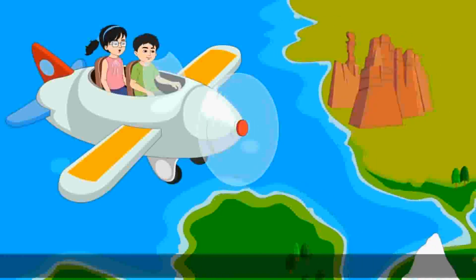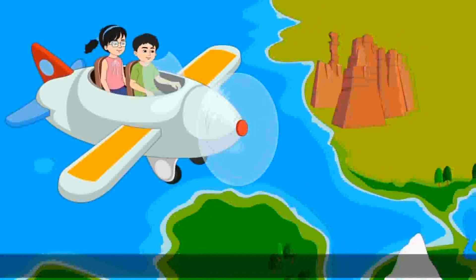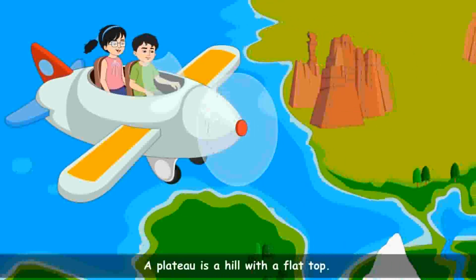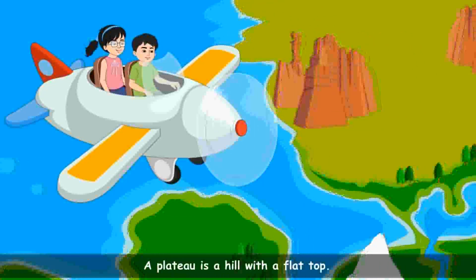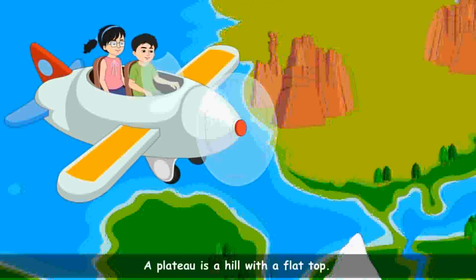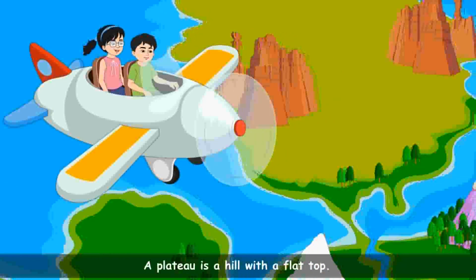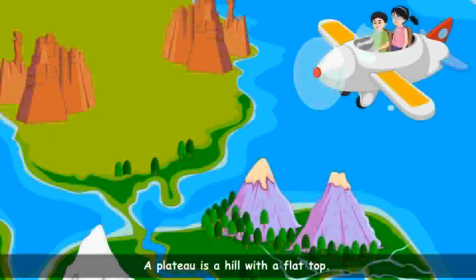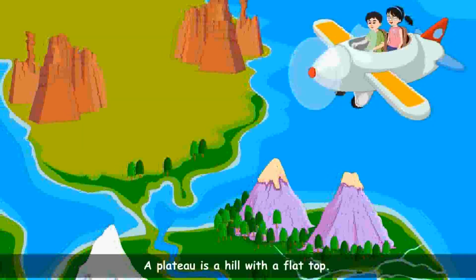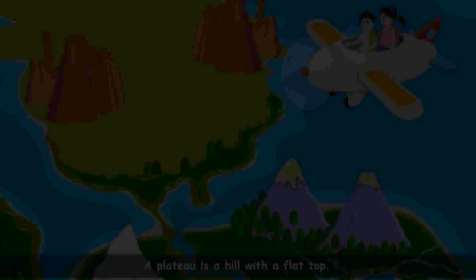We are now flying over a plateau. It is a hill with a flat top. Thus, generally, there is no peak on a plateau. It is also called a tableland.